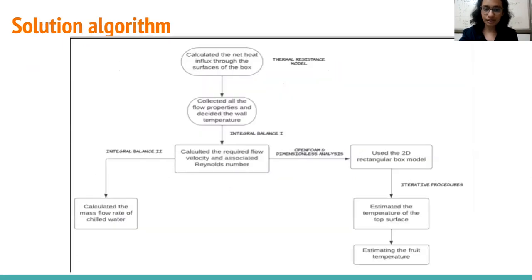This is the solution algorithm that we have followed. First we have constructed a thermal resistance model. We have collected all flow properties and decided the wall temperature. Then we have performed an integral balance in which we have calculated the required flow velocity and associated Reynolds number followed by an integral balance again in which we have calculated the mass flow rate of the chilled water required. We have also done an OpenFOAM and dimensionless analysis treating the 3D model as a 2D rectangular box model and then we have done iterative procedures to estimate the temperature of the top surface as well as the food temperature.